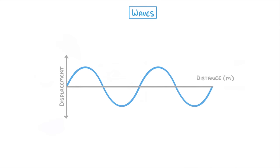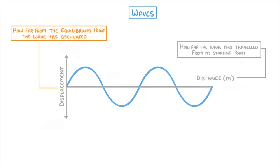To travel from one place to another, the waves vibrate, or oscillate, as we can see in this displacement distance graph. The distance is how far the wave has traveled from the starting point, while the displacement is how far from the equilibrium point the wave has oscillated, so how far it's gone up or down.